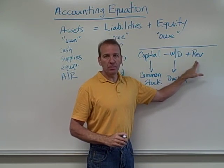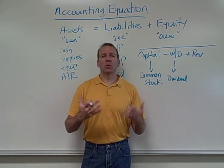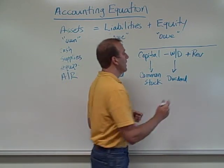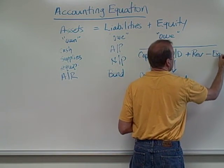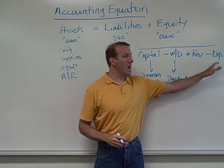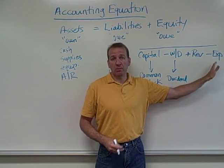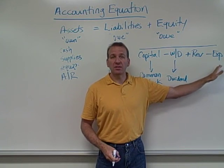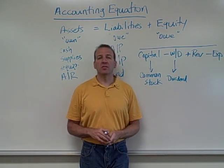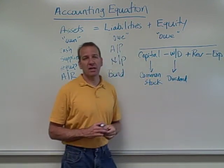Revenue is just like sales — it's the increase we're getting from doing business, whatever product or service we sell. Then we subtract any expenses, which are the costs of doing business. For example: wage expense when we pay employees, supplies expense when supplies are used up, rent expense for our building, and phone expense for our phone bill. All expenses associated with doing business represent a reduction in equity, which is why they're a negative dollar amount.